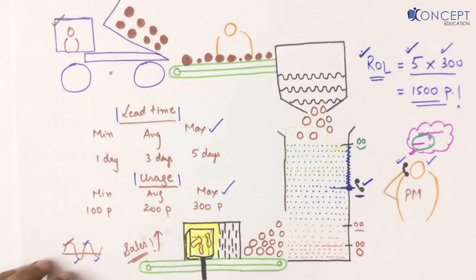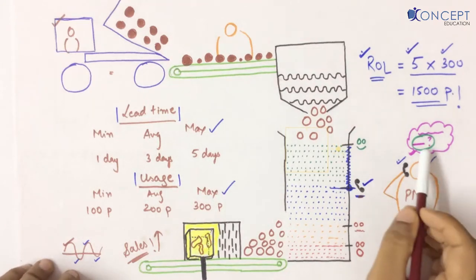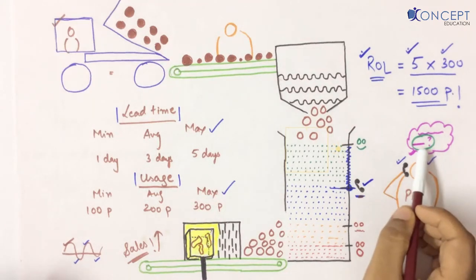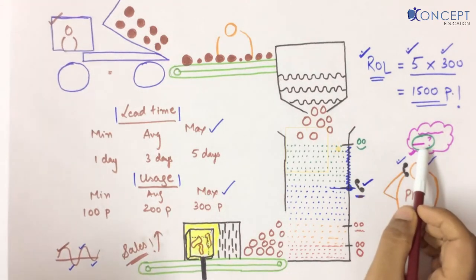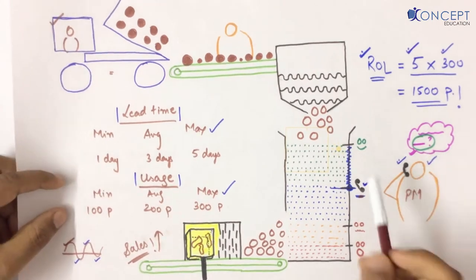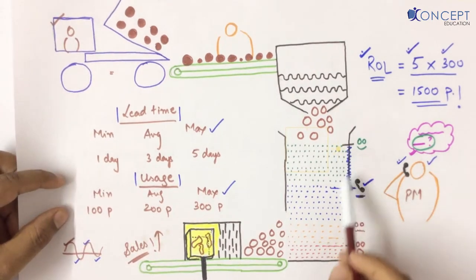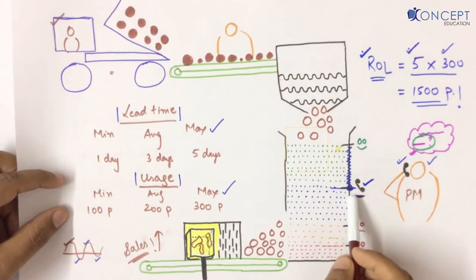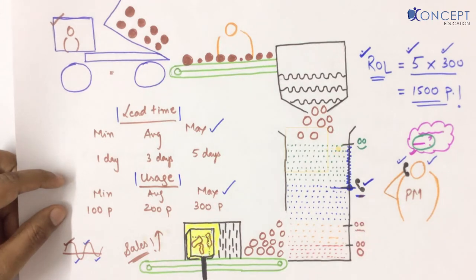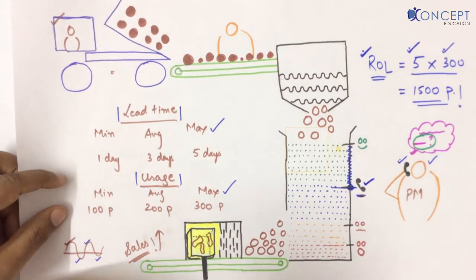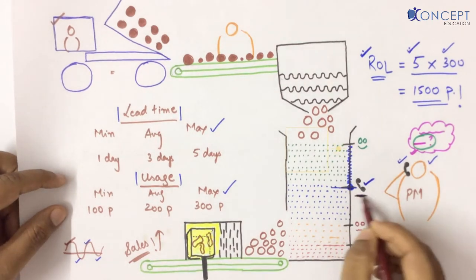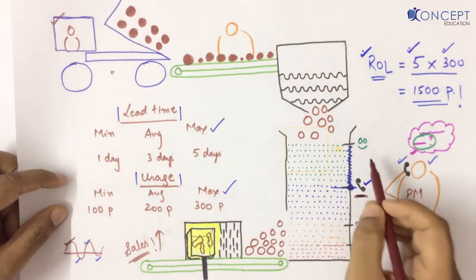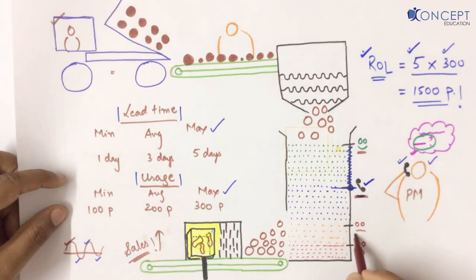Now that we know how to tell the supplier a specific quantity, can we find out the other inventory levels? When we started, we only came to know about one level, which was the reordering level. Can we compute somehow the maximum, the minimum, and the danger level as well?